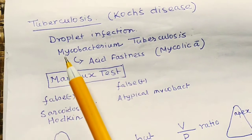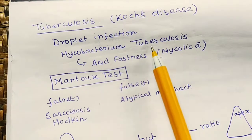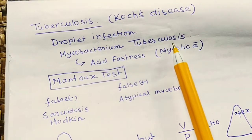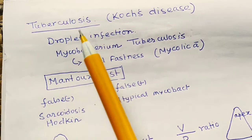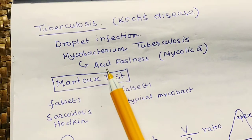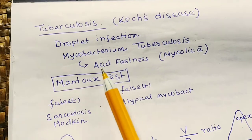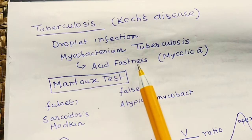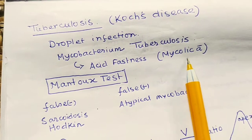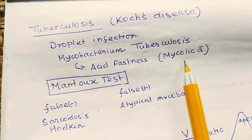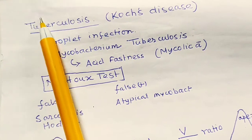Mycobacterium tuberculosis is the bacteria responsible for tuberculosis. It is an acid-fast bacteria. The acid fastness is due to mycolic acid.